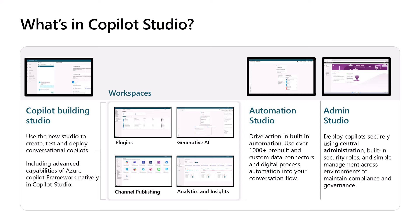If we look inside of Copilot Studio to see what's really inside that box, you're going to find that it has a Copilot building studio, which includes the ability to create plugins and plugin actions. We have generative AI features and commodity components where typical patterns of generative AI capabilities are available to you as a SaaS, but allow you to configure those. We also have the ability to publish to different channels, like Facebook Messenger, web chat, or Microsoft Teams, and a whole reporting infrastructure for analytics and insights on how your Copilot is working.